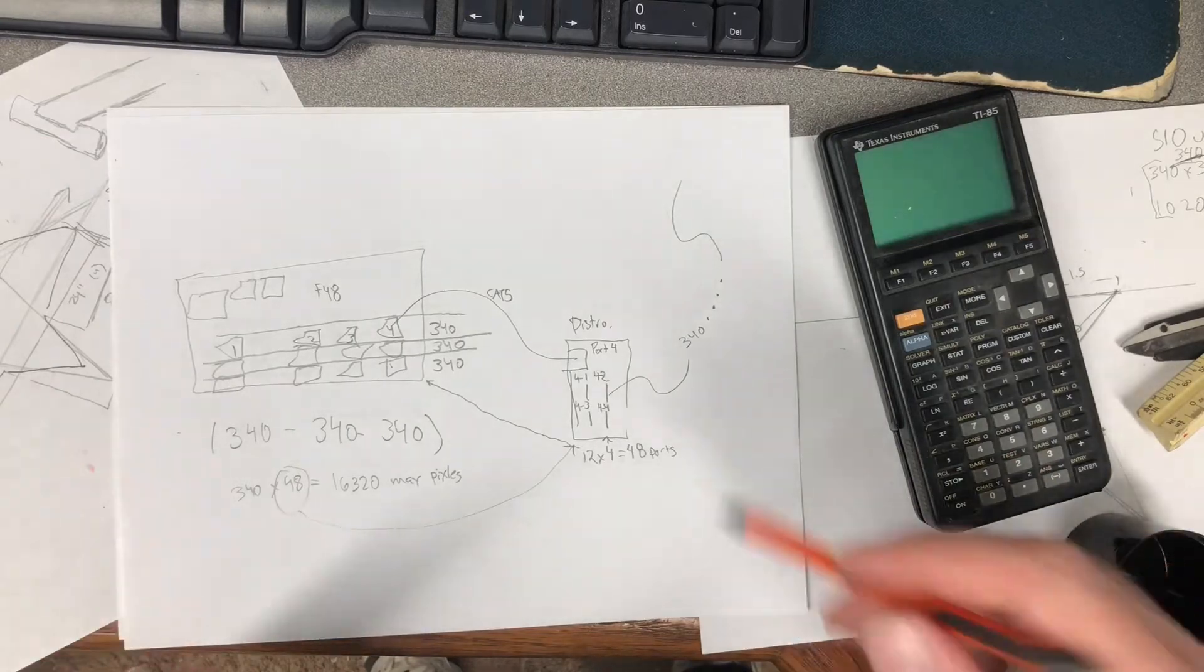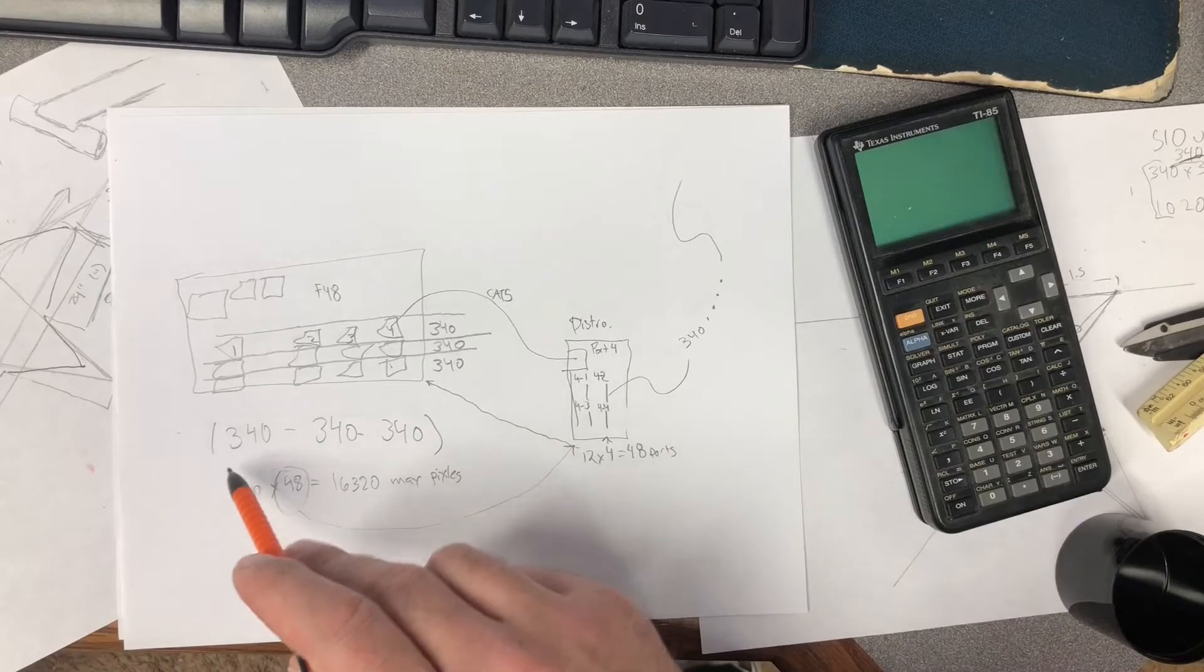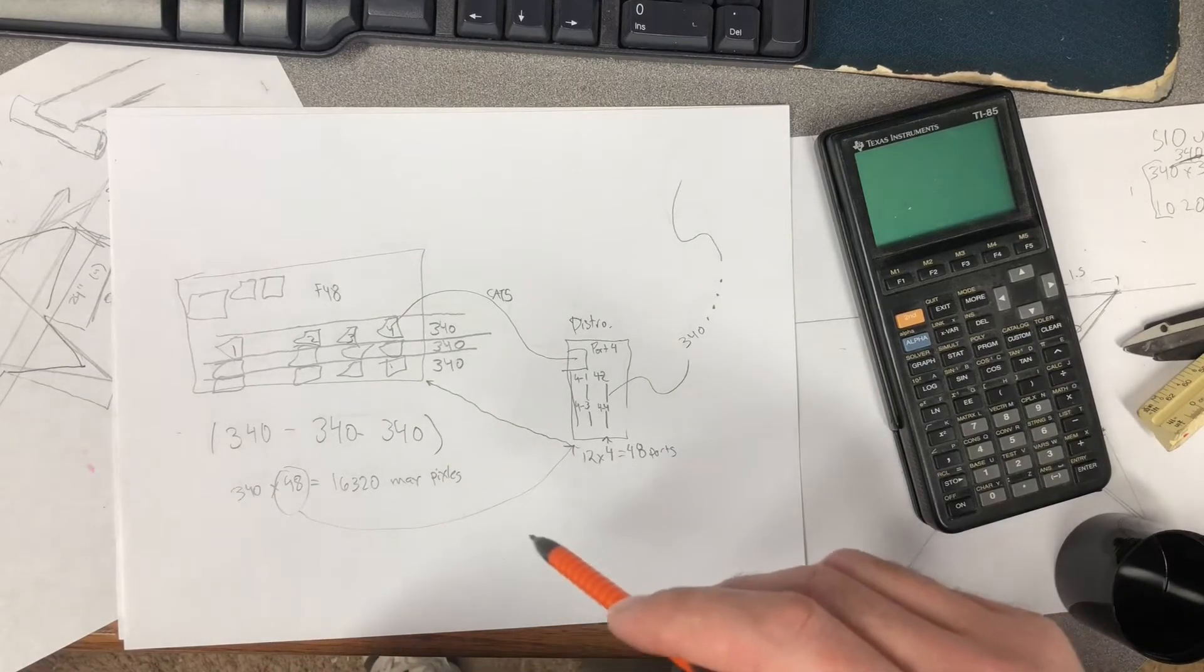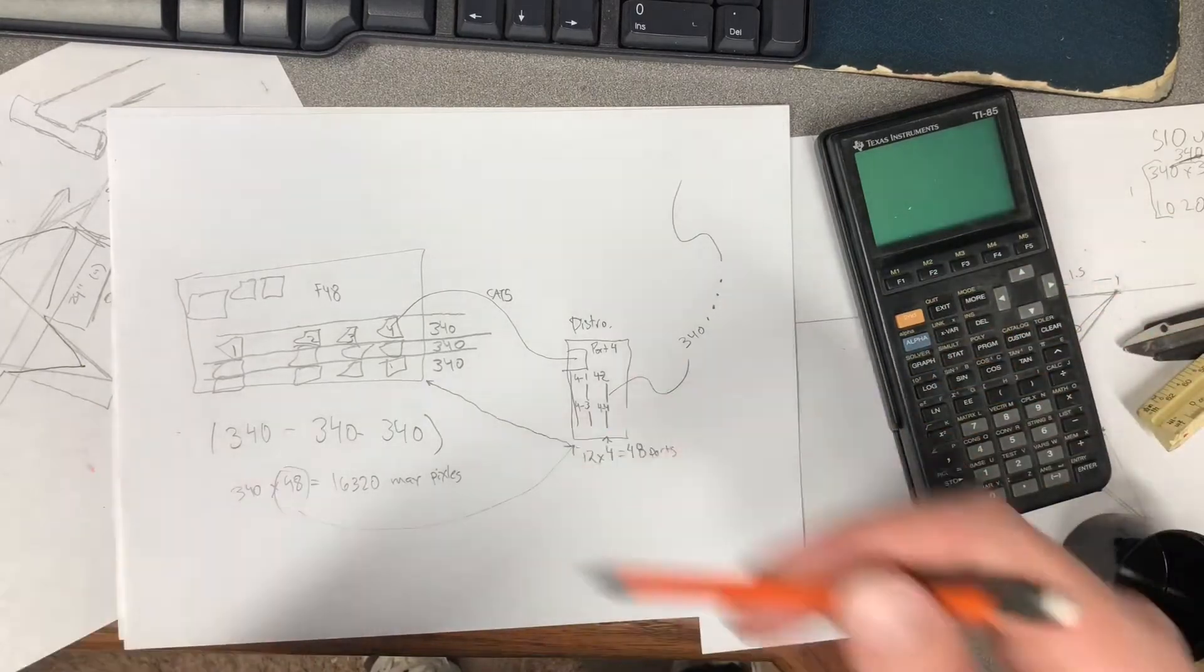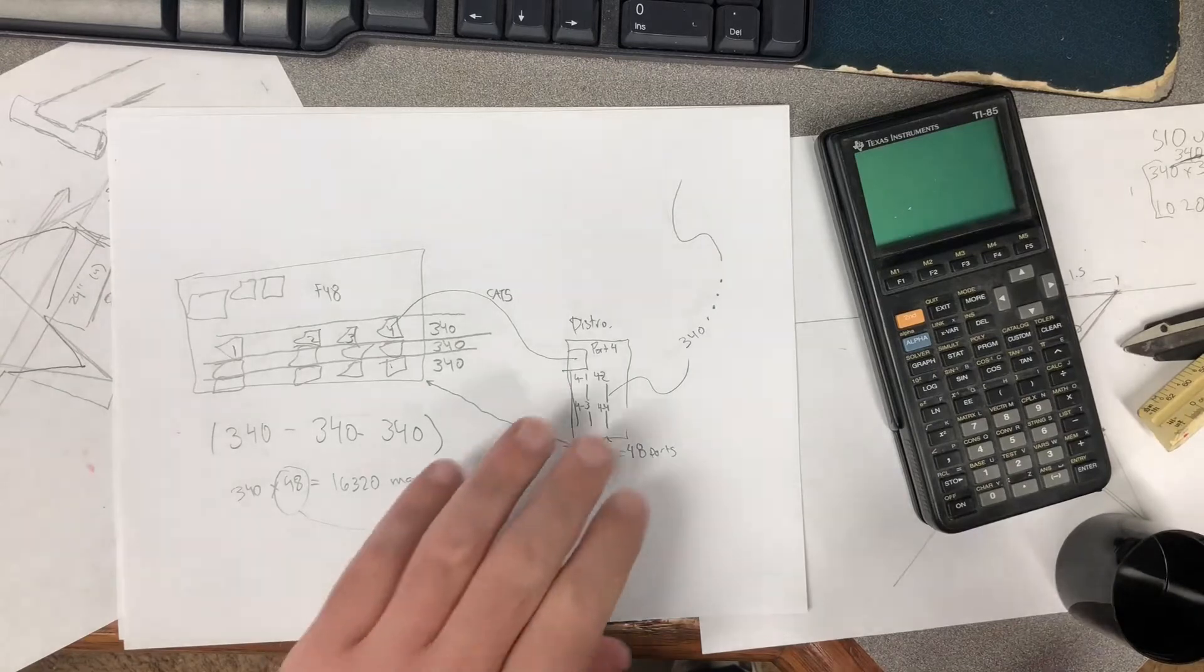But that's the maximum capacity, right here. If we were to fill all this up by a whole lot of distribution boards, put them all over the place, we would be able to spread the 16,320 pixels across our yard, filling up an entire F48.